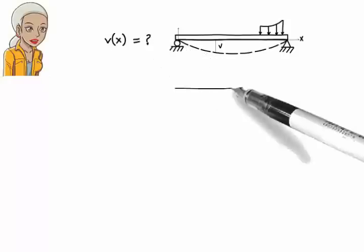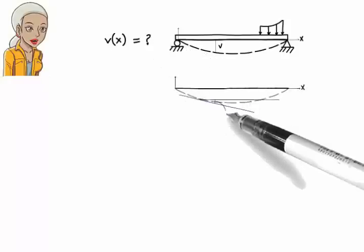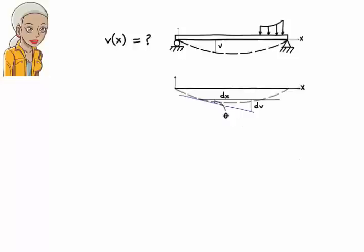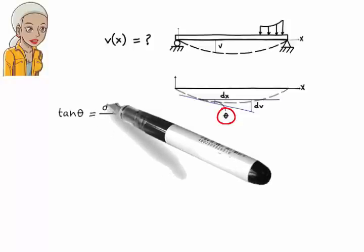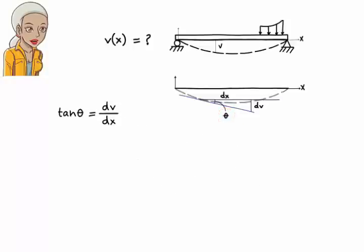To get our equation, we start by drawing a tangent line to the elastic curve at an arbitrary point. Let's denote the angle that the tangent line makes with the X axis by theta. That is, tangent theta is the change in deflection, dV, with respect to change in X, dx.